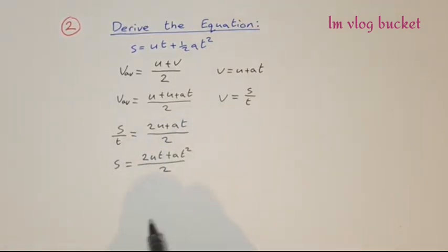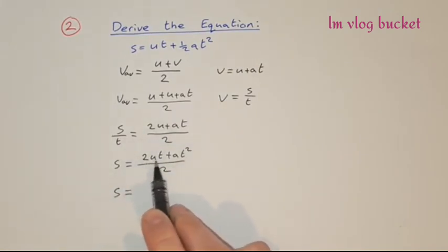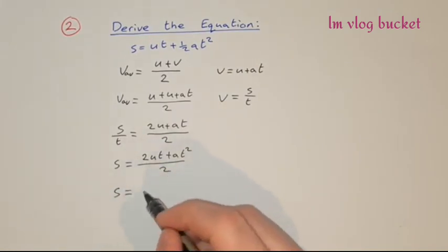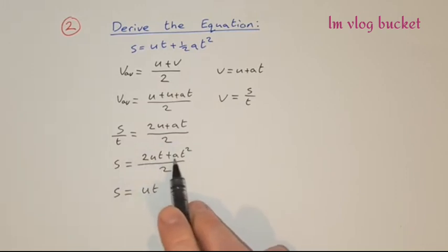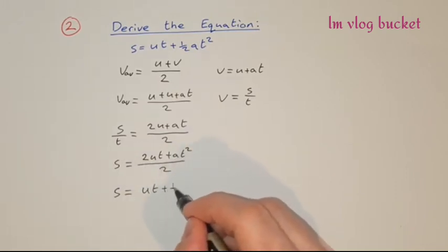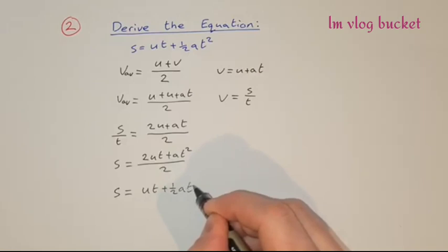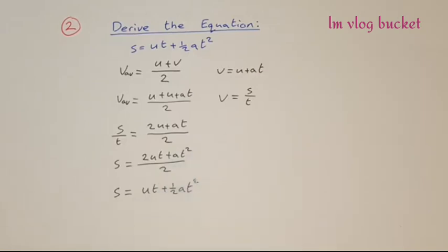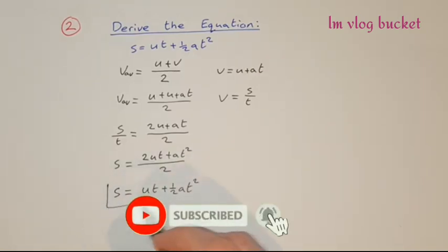On the right-hand side, we divide through by 2: 2ut divided by 2 is ut, and at² divided by 2 is ½at². So s = ut + ½at², which is what we were looking for.